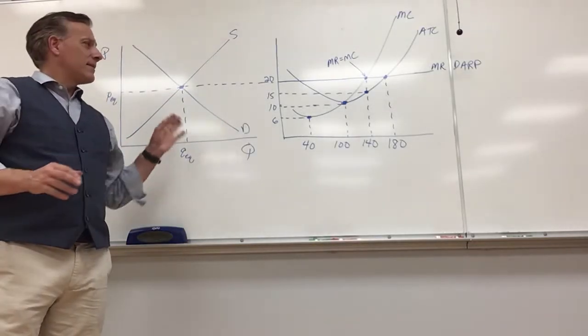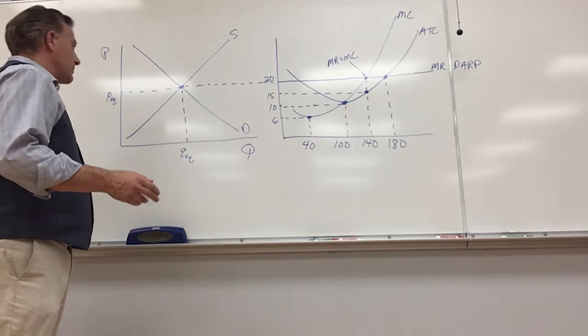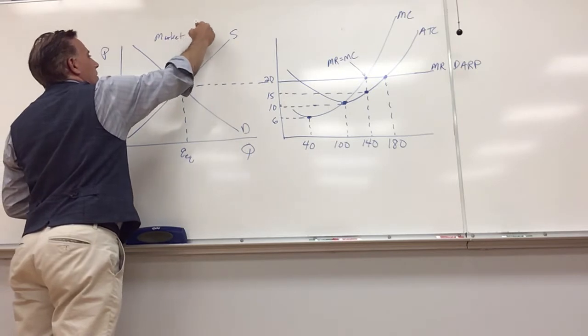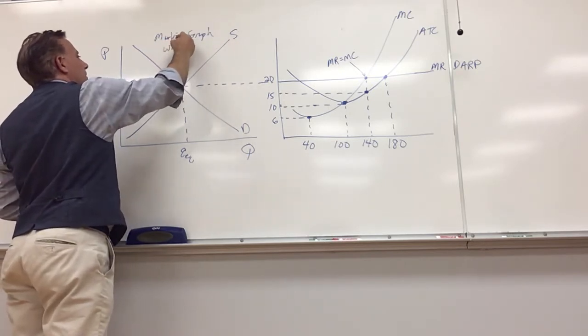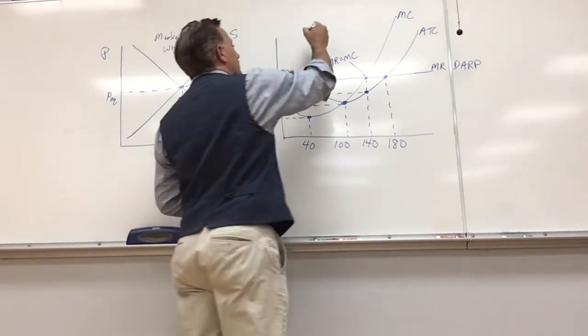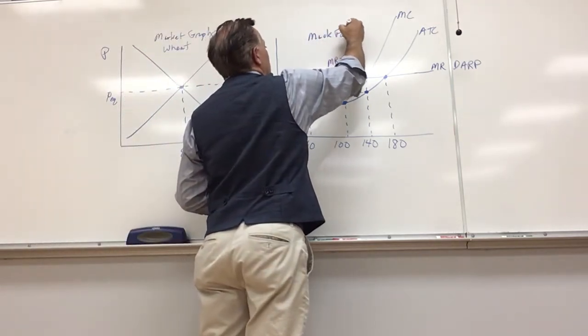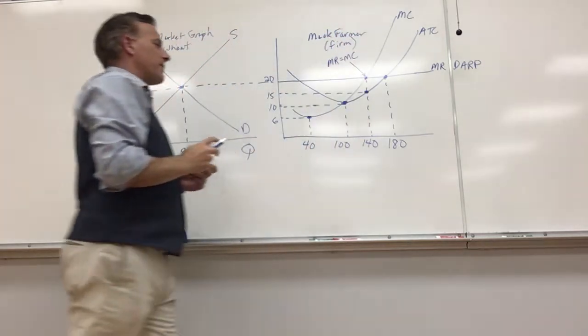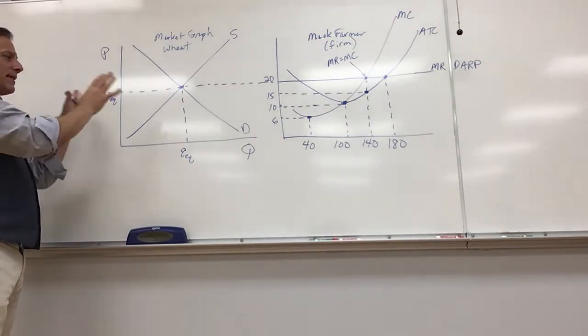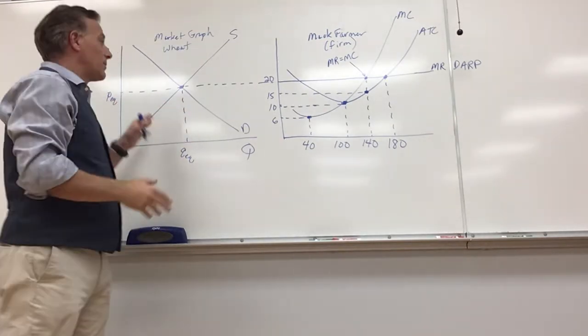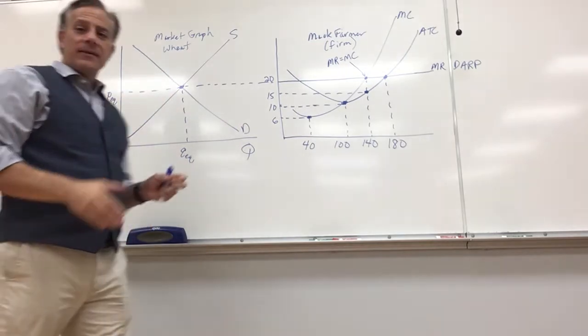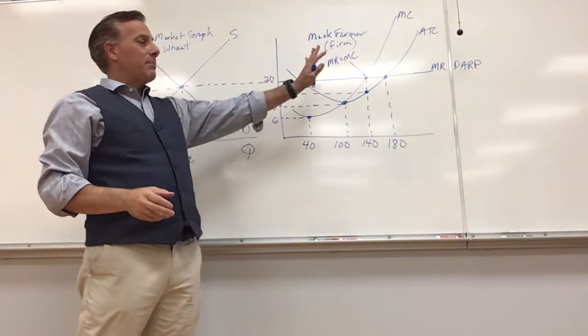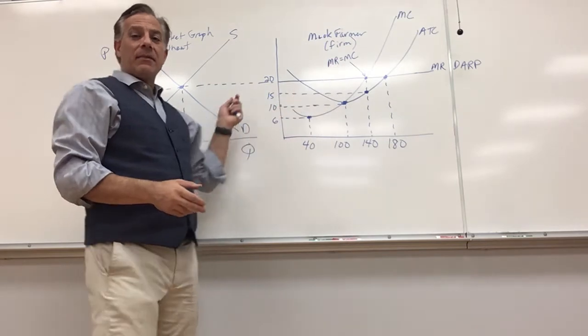Alright, so here I have side-by-side graphs. Make sure that you know that this is the market graph. Let's say this is wheat, and this is Matt Farmer. This is the individual firm. This sets the price right, so in perfect competition this sets the price. There's identical products, they're all sold at the identical price.